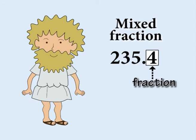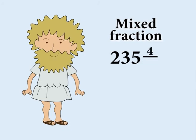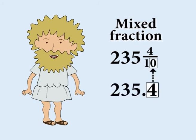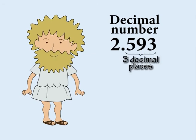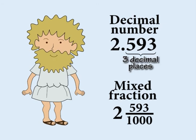To work out how to write the fraction part of the mixed fraction a decimal number expresses, write what occurs to the right of the decimal point as the numerator. And as the denominator, write one followed by the same number of zeros as there are places or positions to the right of the decimal point. So in the decimal number two point five nine three, there are three places to the right of the decimal point. So the mixed fraction is two and five hundred and ninety-three thousandths, where the denominator shows one followed by three zeros.